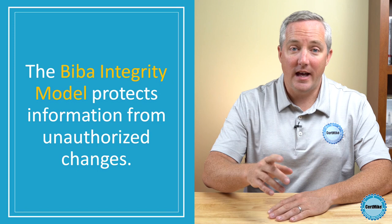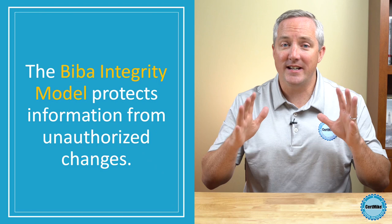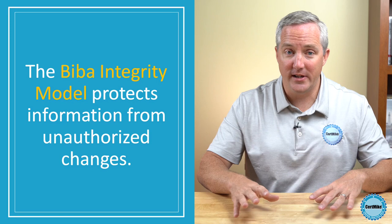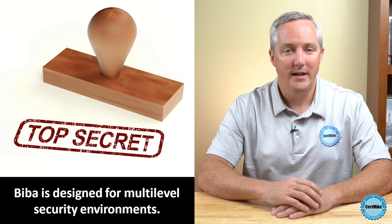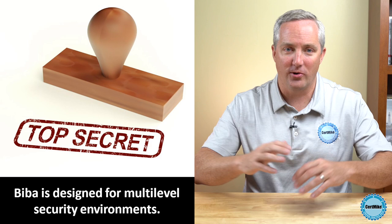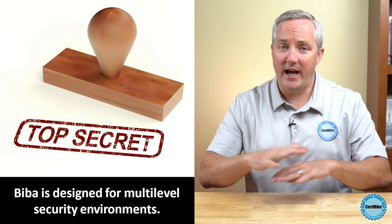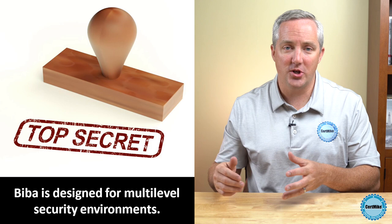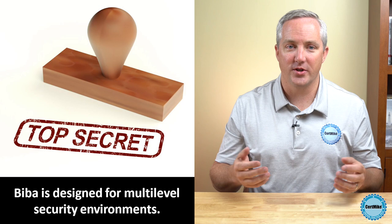The first thing you need to know is that the Biba Model is all about the integrity of information. That means that we're not concerned about confidentiality when we're using this model. We're talking about protecting information from any unauthorized changes. We want to prevent someone from intentionally or accidentally altering information in a way that makes that information incorrect. The Biba Model is really talking about a very high-security environment that uses something we call multi-level security, where individuals have security clearances and are only allowed to access information that matches their security clearance level.